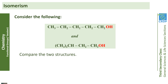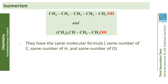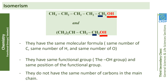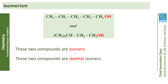Now we will go a bit faster and compare two more structures. These two structures have the same molecular formula, the same functional group, and the same position of the functional group on carbon number one. However, they do not have the same number of carbons in the main chain — the first has five carbons in the main chain, whereas the second has only four. These are isomers because they have the same molecular formula but different structural formulas, and we call them skeletal isomers since they do not have the same number of carbons in the main chain.